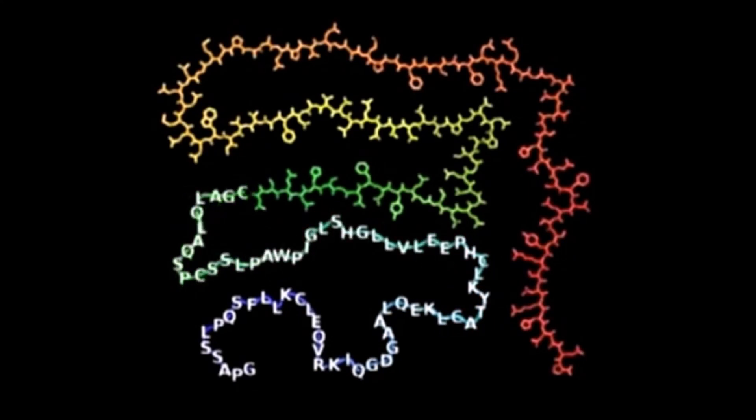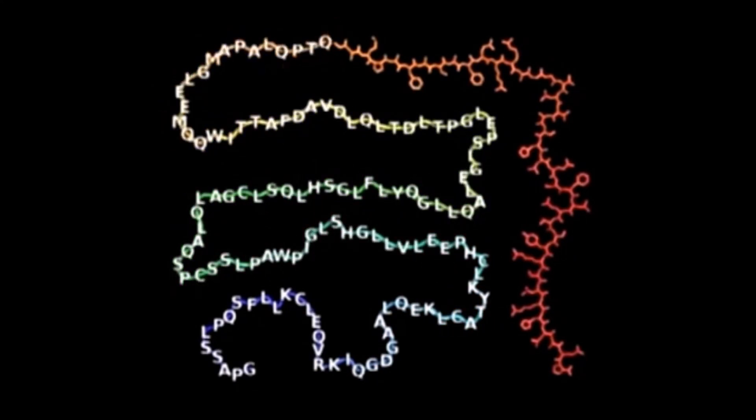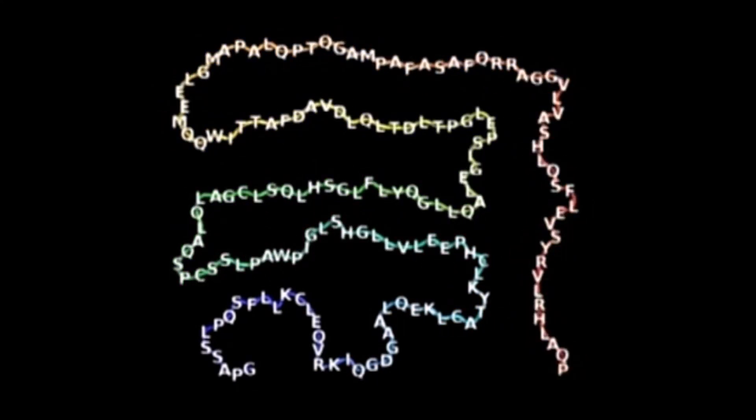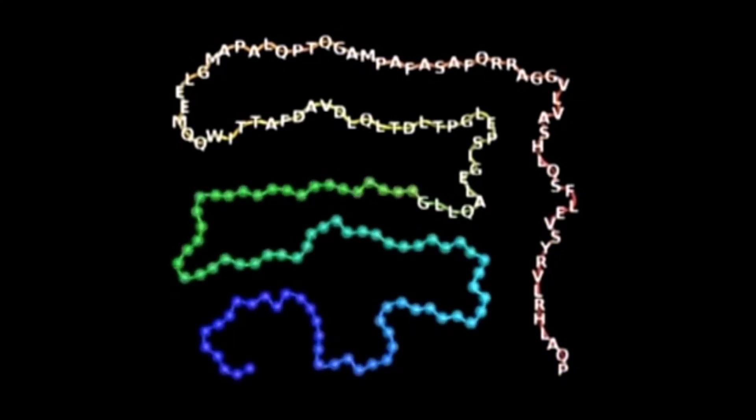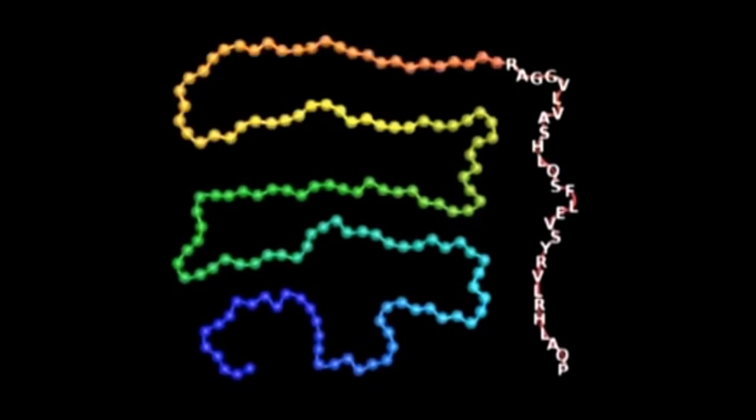To make it simpler, each different amino acid can be represented by a single letter. Now each amino acid is shown as a colored ball, looking like beads on a string. This makes the protein structure easier to imagine.